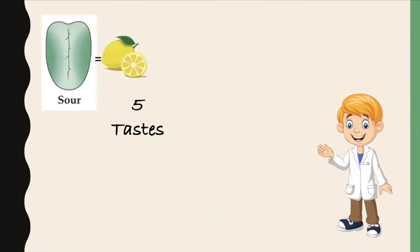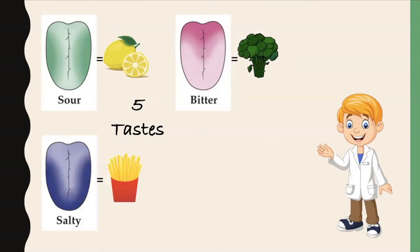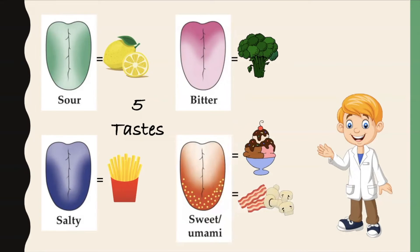There are five main flavors we are able to taste. Sour, which is like lemons. Bitter, which is like broccoli. Salty, which is like french fries. Sweet, which is like ice cream. And a special fifth taste known as umami, which has a meaty flavor, like bacon or mushrooms. Brainiac's favorite taste is sweet. What's yours?